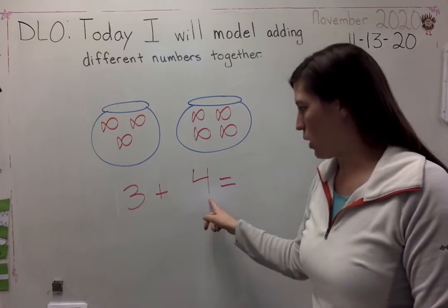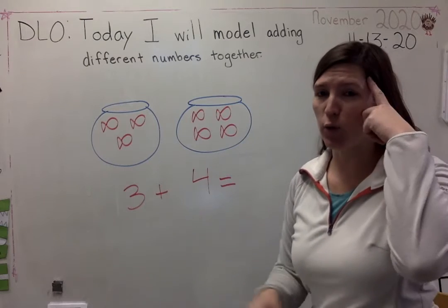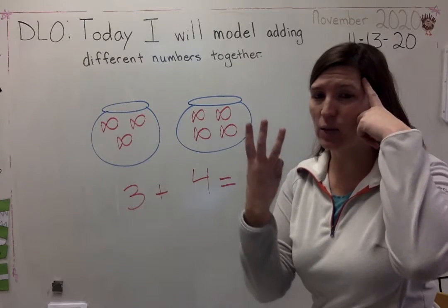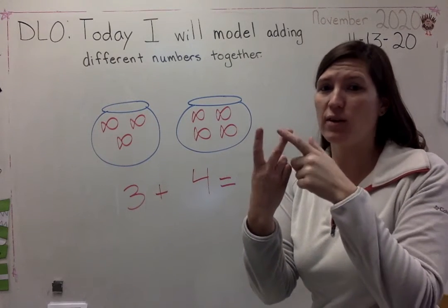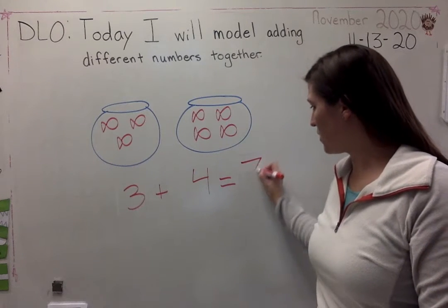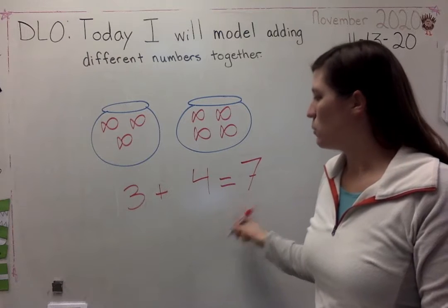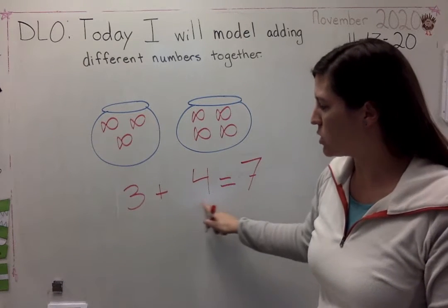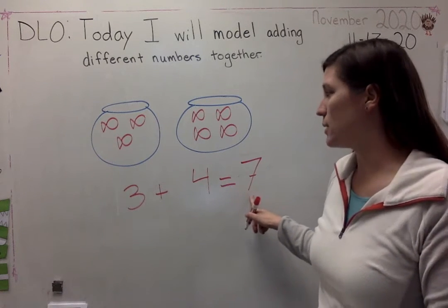Equals how many fish do I have all together? Which number is greater? Three or four? Four. So put four on your head, three in your hand. Let's count up. Four, five, six, seven.